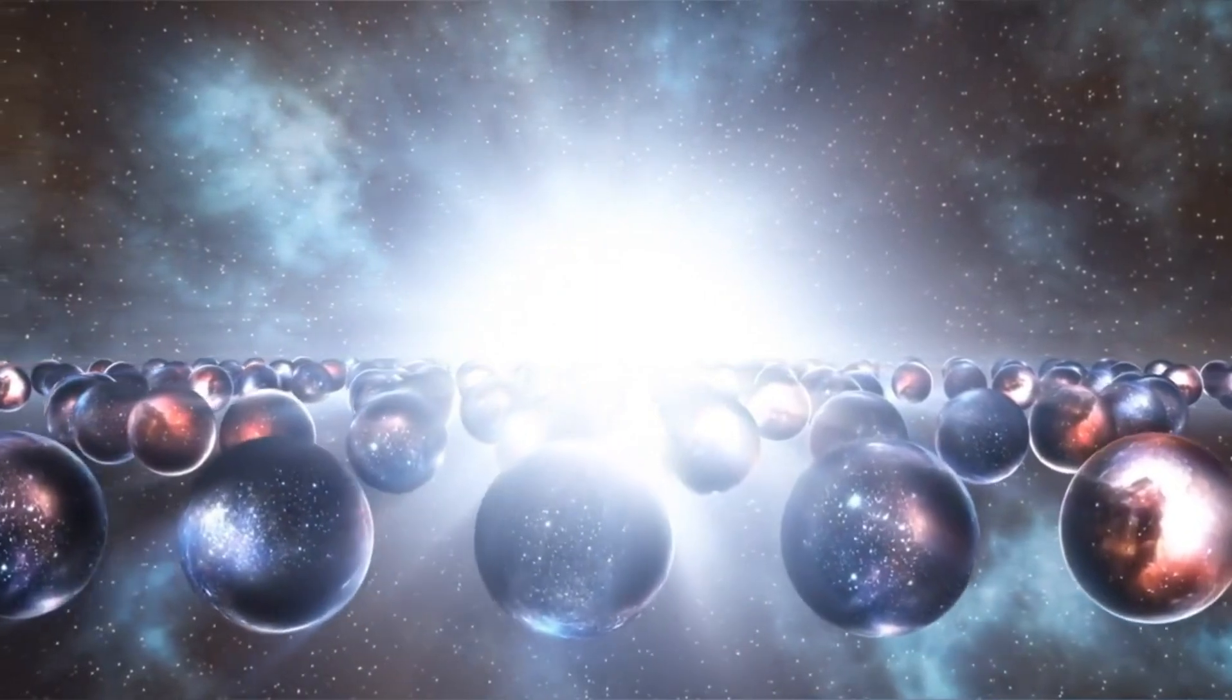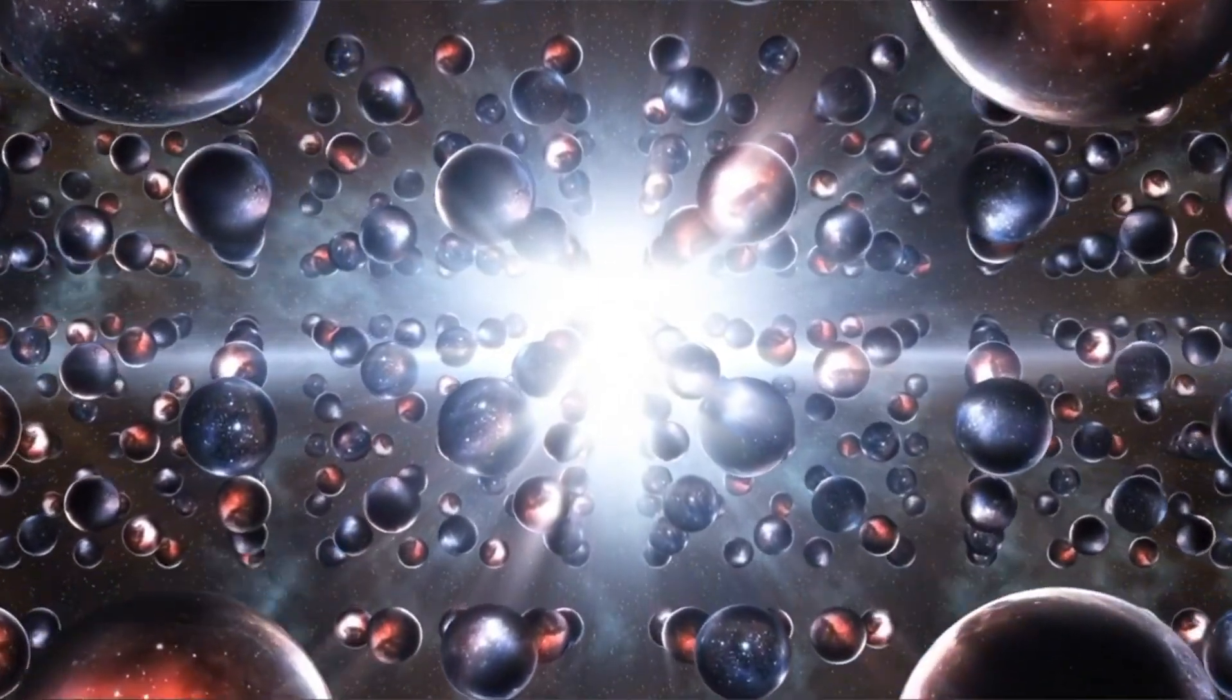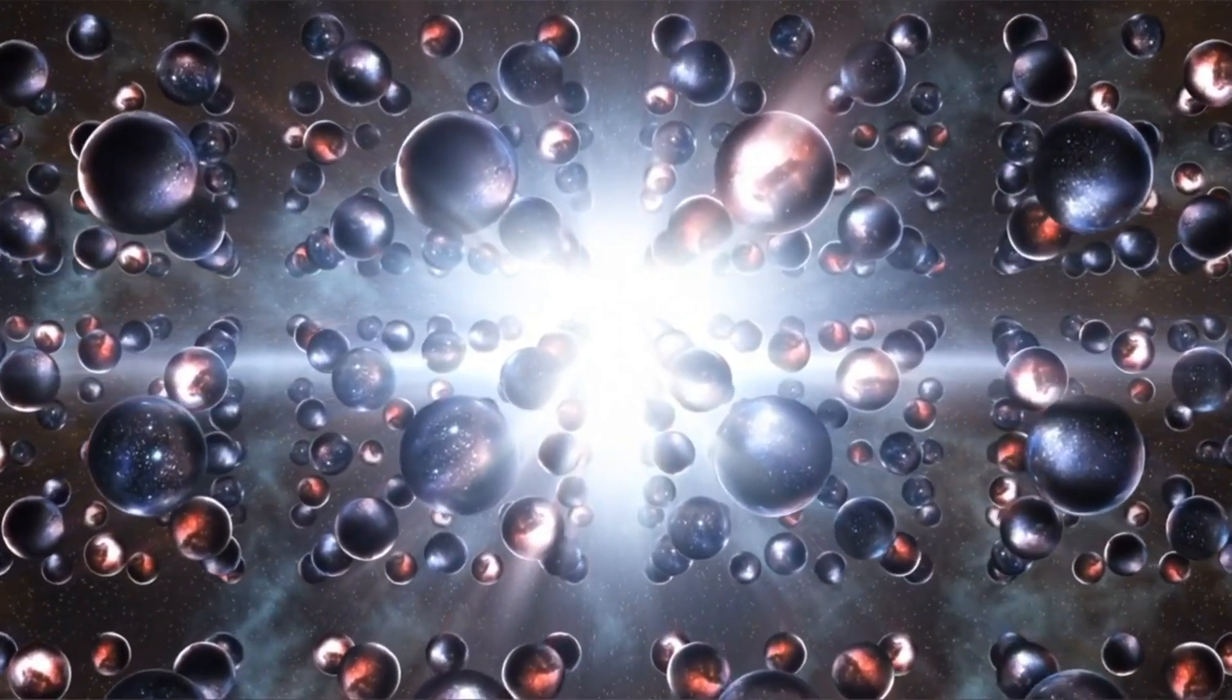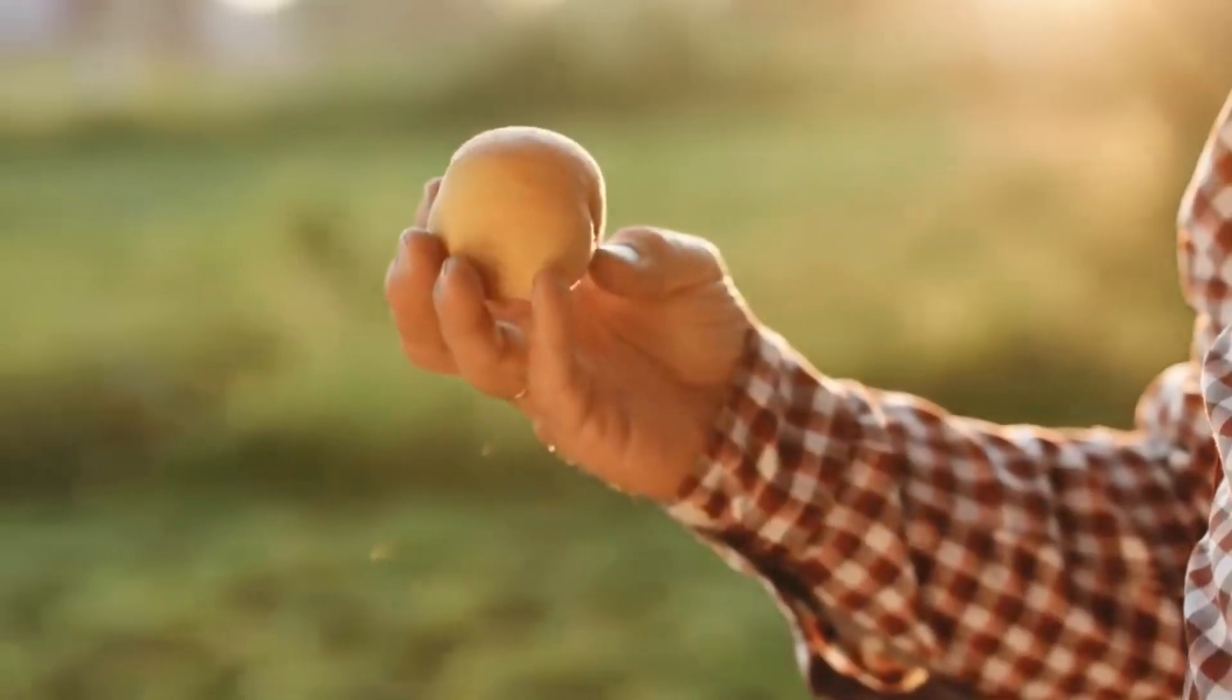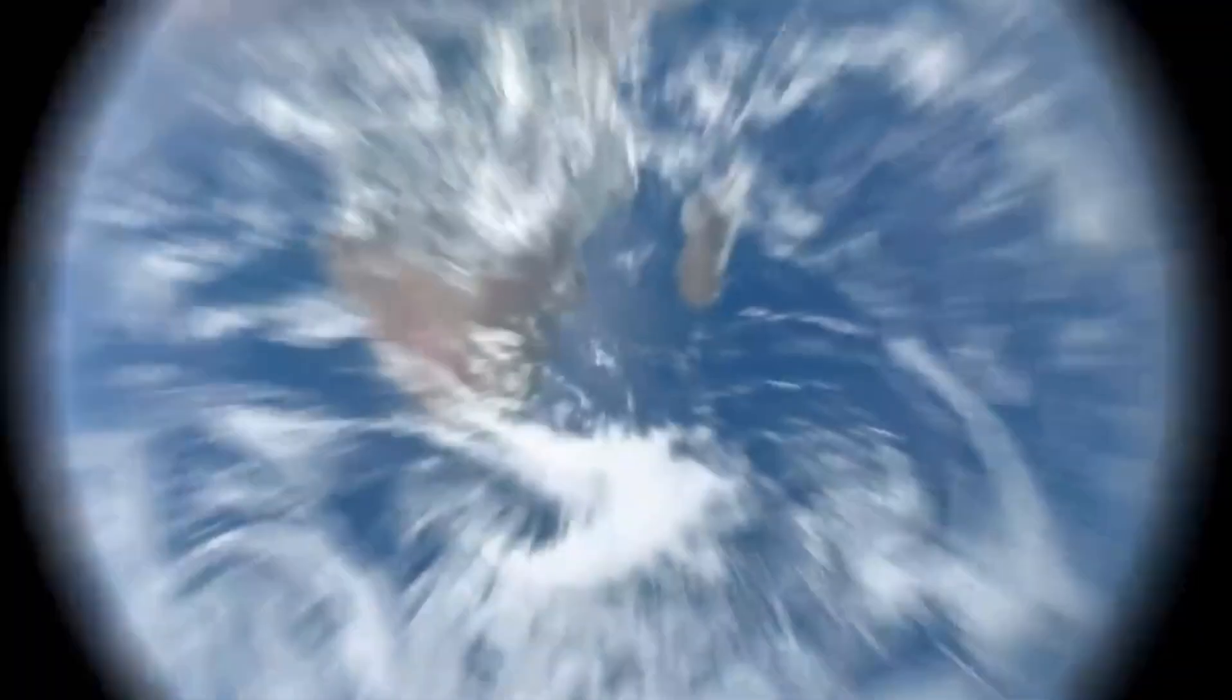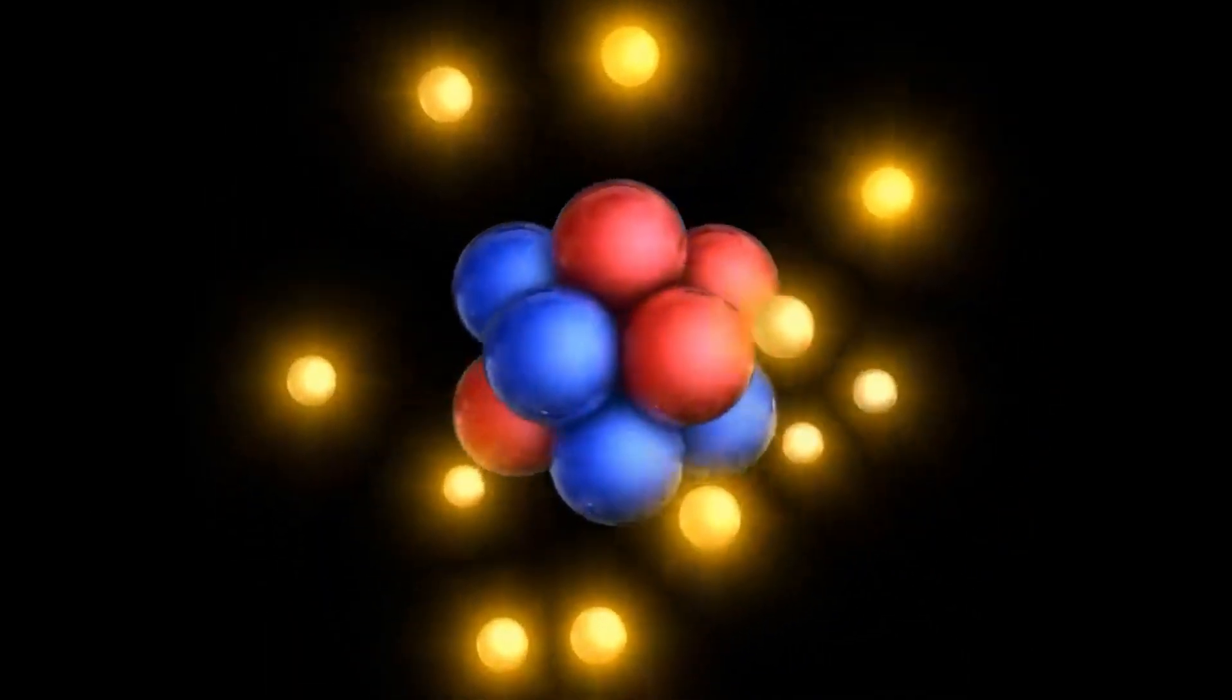At the heart of the atom, in the atomic nucleus, we find protons and neutrons, which in turn consist of even smaller particles, quarks. Quarks are some of the most fundamental and smallest building blocks of matter, occurring in six different types and forming bonds through strong nuclear forces that make matter possible.